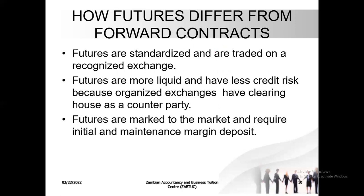How do futures differ from forward contracts? Futures are standardized in terms of amounts and timing, and they are traded on an organized exchange, unlike forward contracts which are found at your bank. Futures are more liquid and have less credit risk because organized exchanges have a clearinghouse as a counterpart. The futures exchange is represented by a clearinghouse — it's at the clearinghouse where you are going to make your deposits and get your profit.